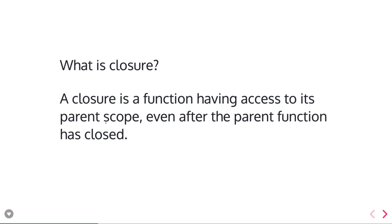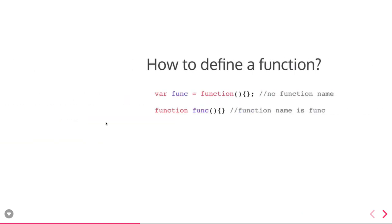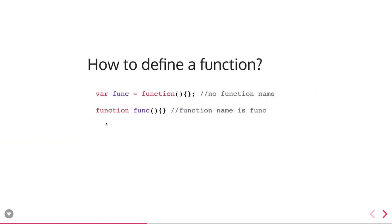If you have nested functions — function A and function B — function B has access to the scope of function A and it can store some variables even when function A has returned. So if you do console.dir on function B, inside the closure of function B you will see that stored value.